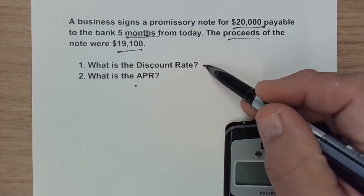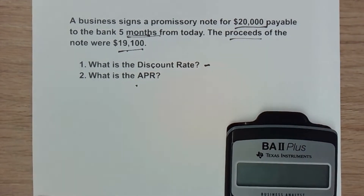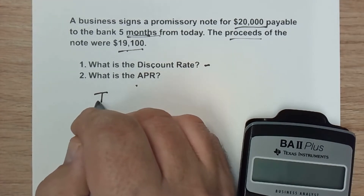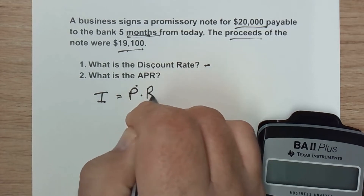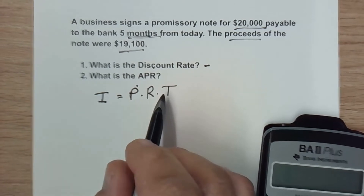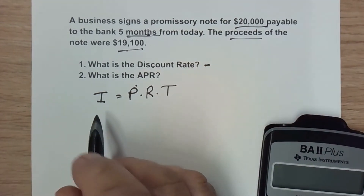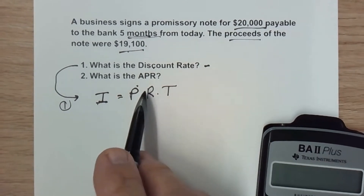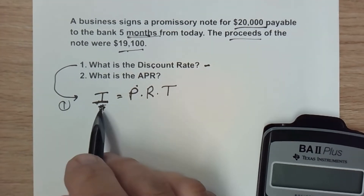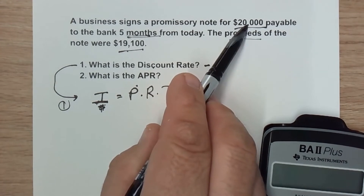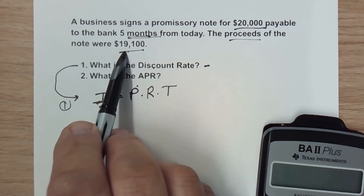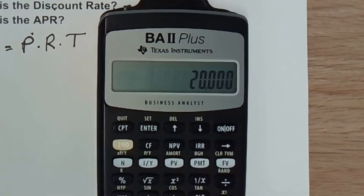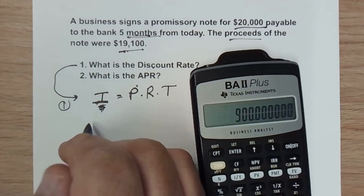First, we need to figure out what the discount rate is. To figure out the discount rate, we're talking about simple interest. The simple interest formula is: interest equals principal times rate times time. The interest in dollars is the difference between the $20,000 to be repaid and the $19,100 proceeds — the amount actually received. So $20,000 minus $19,100 gives us interest of $900.